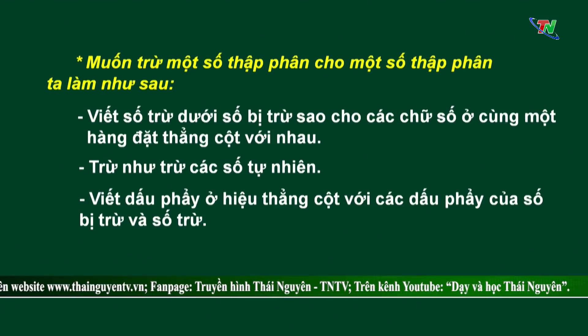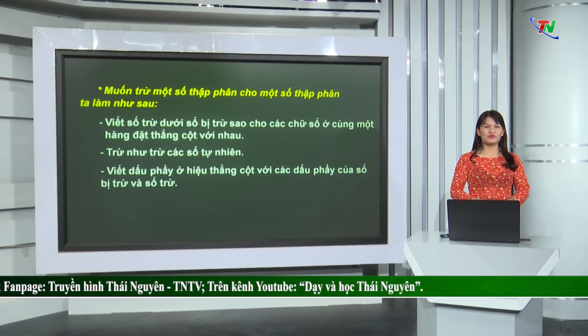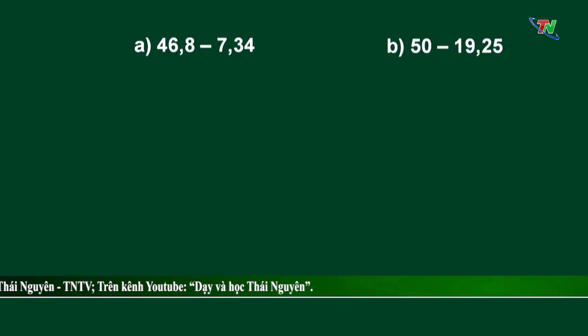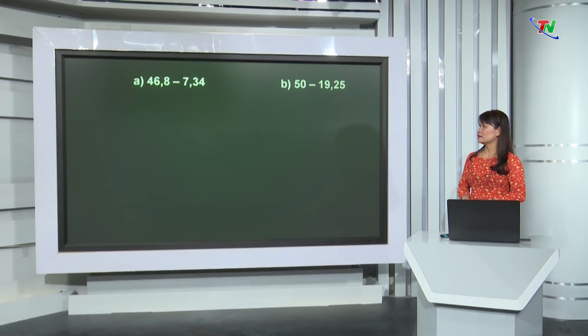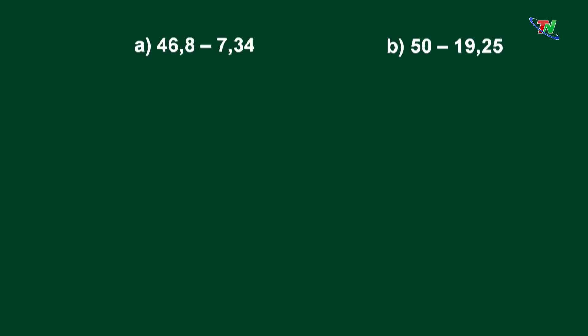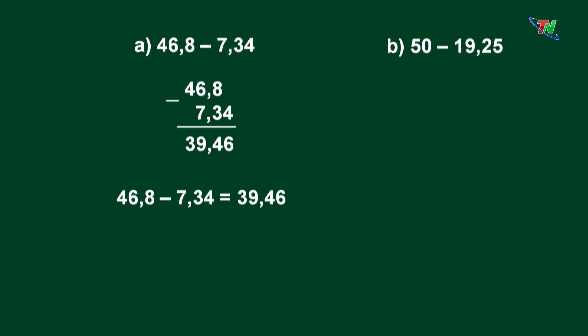Các em đã nắm chắc cách thực hiện trừ 2 số thập phân chưa? Bây giờ chúng ta hãy vận dụng vào để thực hiện các phép tính sau nhé. Các em đã thực hiện rồi và tìm được kết quả đúng không nào? Bây giờ chúng mình cùng quan sát lên màn hình để kiểm tra kết quả nhé. Trước tiên ta đặt tính, sau đó ta thực hiện trừ như trừ số tự nhiên, và kết quả cuối cùng tìm được là 39,46. Vậy 46,8 - 7,34 = 39,46.